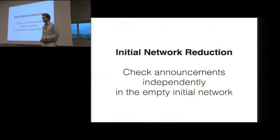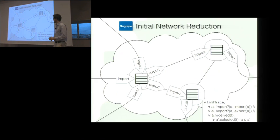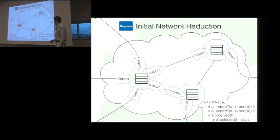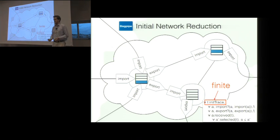The solution to this is what we call the initial network reduction. Instead of checking all traces, we only check traces that forward exactly one announcement through the empty network where nothing else has been forwarded before. So instead of forwarding everything at once, we check the trace where we only forward red, then green in the empty network, then blue. This is great because the set of all such traces is finite — there are only a finite number of paths announcements can take, and announcement sizes are bounded by the specification.